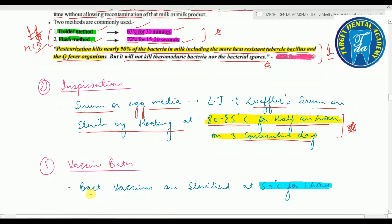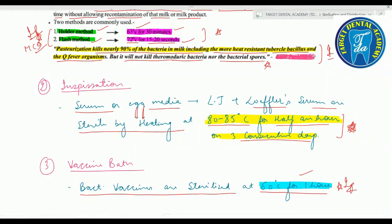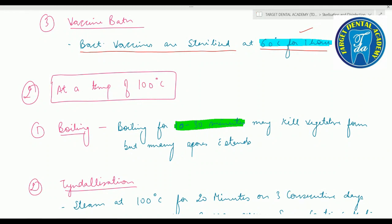Third method at below 100°C is vaccine bath: bacterial vaccines are sterilized at 60°C for one hour. At the temperature of 100°C, the first method is boiling. Boiling at 100°C for 10 to 30 minutes may kill the vegetative form, but many spores can withstand it.